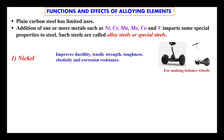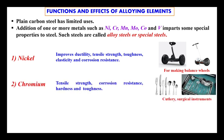When nickel is added to plain carbon steel, the properties enhanced are ductility, tensile strength, toughness, elasticity, and corrosion resistance. Because of this, balancing wheels are manufactured using this nickel-alloyed steel. When chromium is added to plain carbon steel, it enhances tensile strength, corrosion resistance, hardness, and toughness, so cutlery and surgical instruments are manufactured through this alloying process. When we see scissors or any surgical instruments in a hospital, we can know that chromium is one of its components providing corrosion resistance.